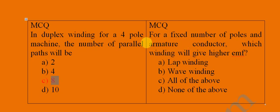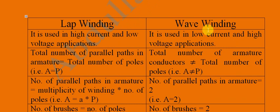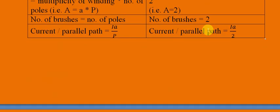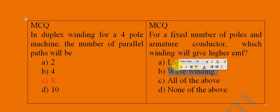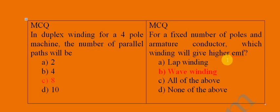Regarding wave winding: for a fixed number of poles — north pole and south pole magnetic poles — and a fixed number of armature conductors, which winding gives higher EMF? Since wave winding is used for high voltage applications, wave winding will give higher EMF for a fixed number of poles and armature conductors.